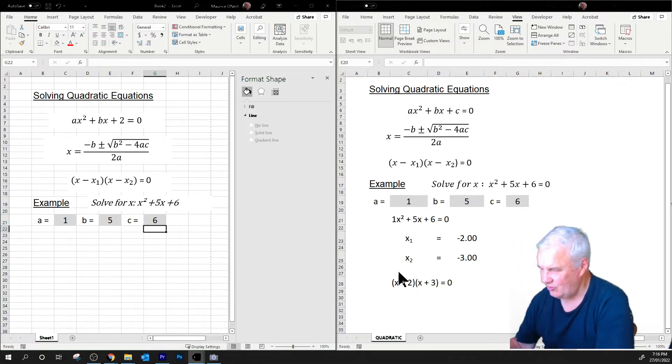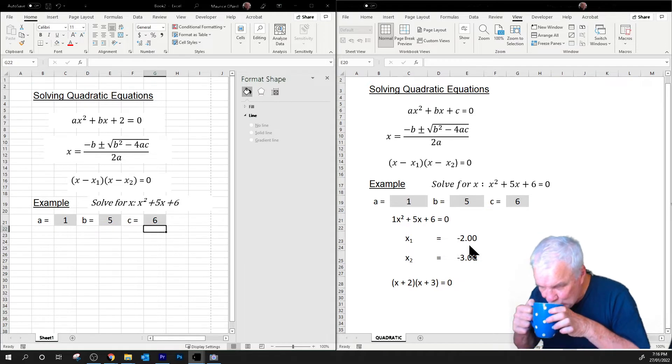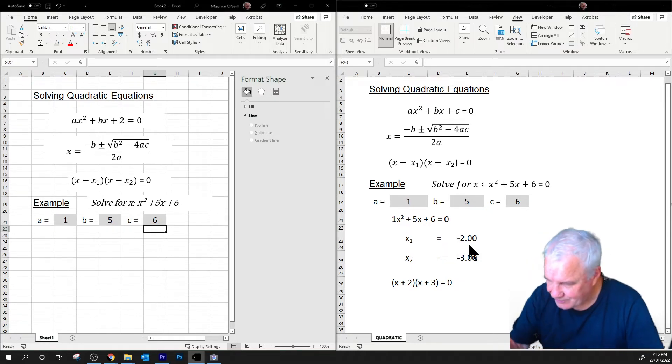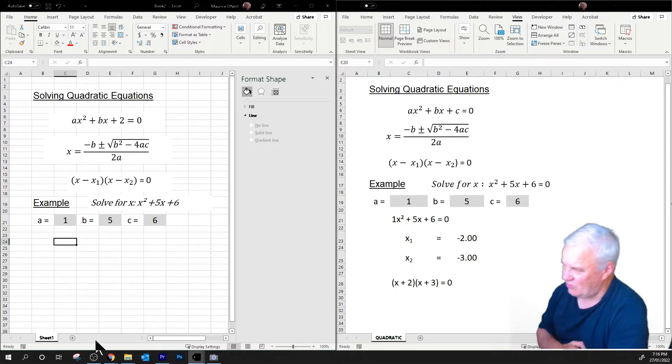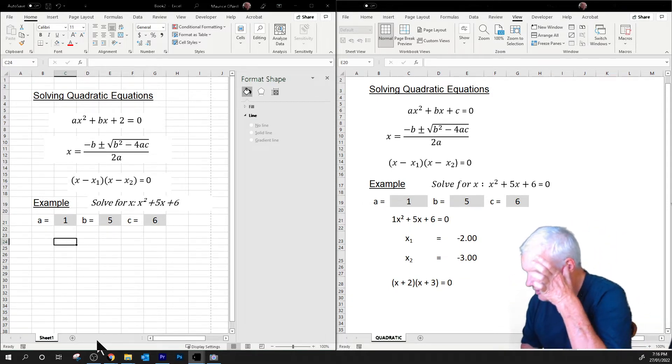And you can see that if we change those, it updates some of these values down here that's actually calculating it. How is it doing that? This is the question. So the next thing I want to do is to set up this equation here.